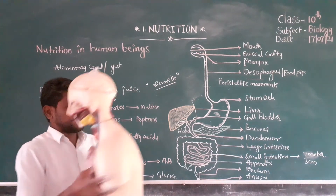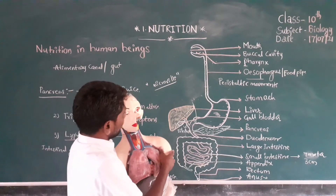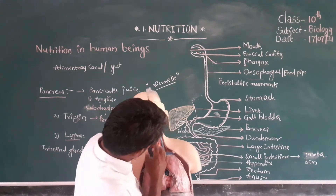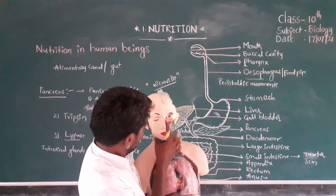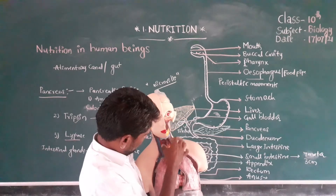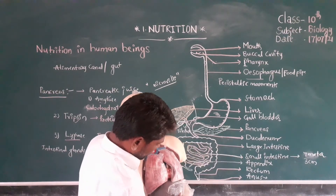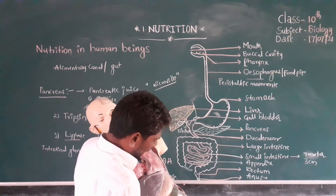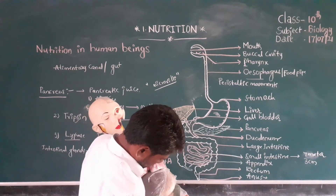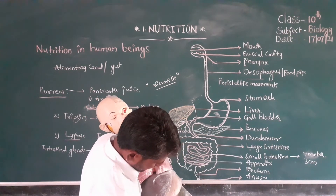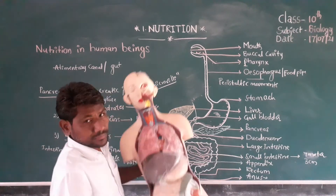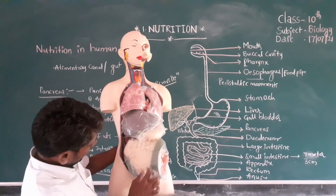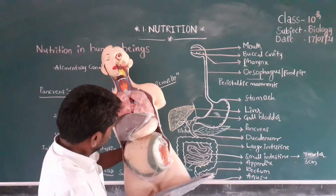Now you can see the diagram here. The first part is the mouth, next the buccal cavity, next the pharynx, next the food pipe. This is the liver. Next, this is the pancreas. Here is the small intestine and the large intestine.